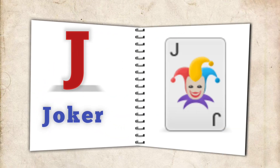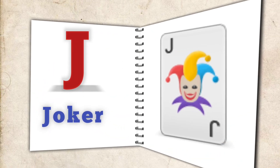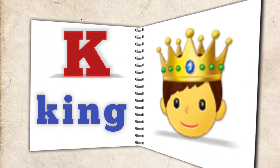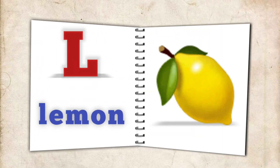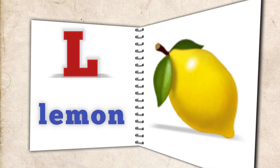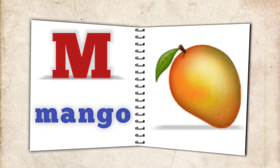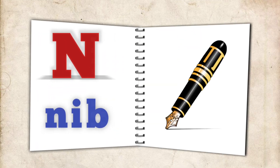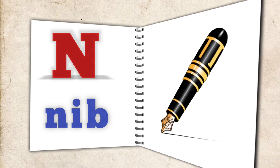J for joker, K for king, L for lemon, M for mango, N for neem.